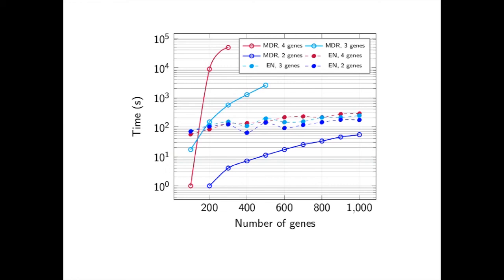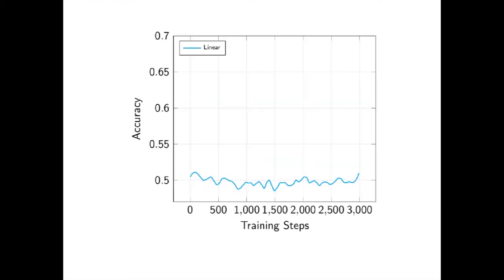Different types of neural networks will be able to detect epistasis with different levels of accuracy. Here we see a linear neural network attempting to detect a non-linear problem epistasis and is unable to learn over a set number of training steps. Its accuracy, shown on the y-axis, is never really able to go above 50%, nothing better than random chance.